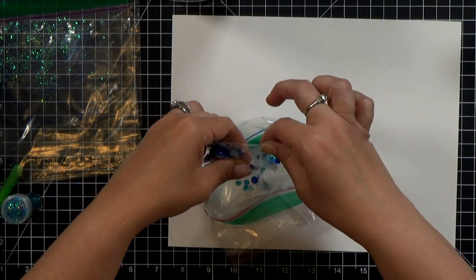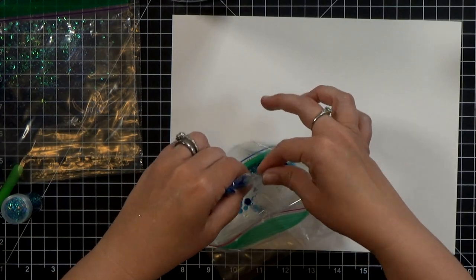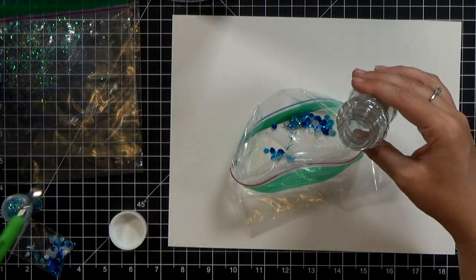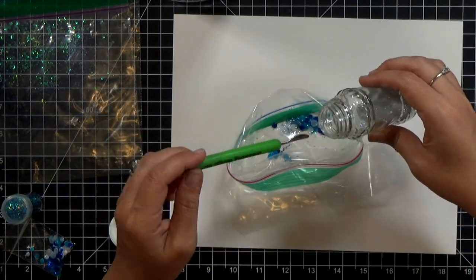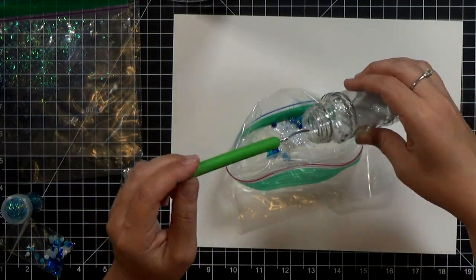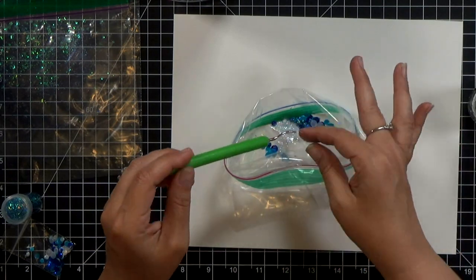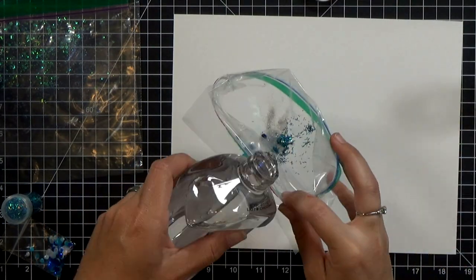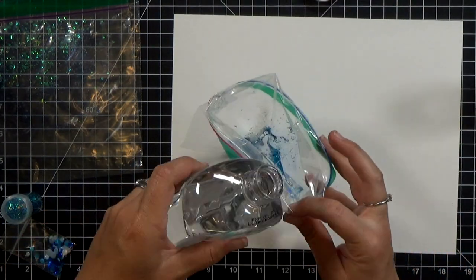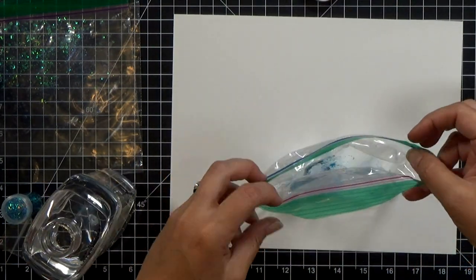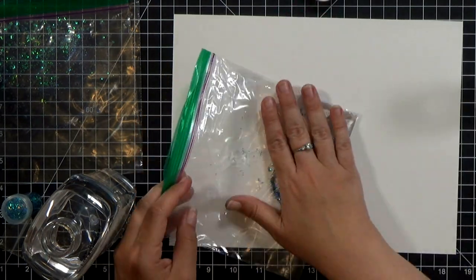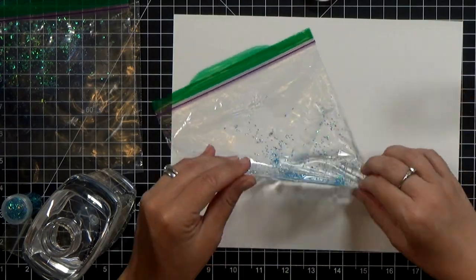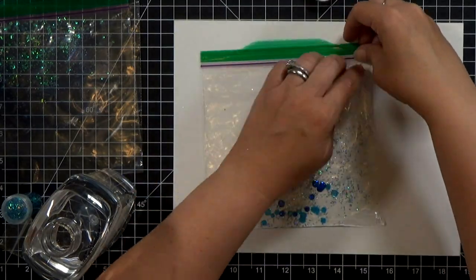Next, let's work with the mineral oil. The mineral oil is going to have the most amount of movement and because of that you're going to want to add more pieces inside. So I've added a healthy dose of a couple different kinds of glitter and then quite a few sequins here. And then I'm going to add about a tablespoon and a half of mineral oil. You don't need a whole lot. Again, we want it to be thin. And I'm going to just go ahead and squeeze out as much air as possible.